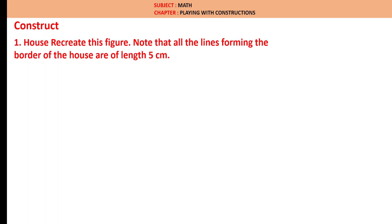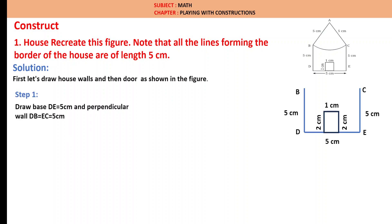Construct a house. Recreate this figure. Note that all the lines forming the border of the house are of length 5 cm. Here we need to construct a house where walls are 5 cm height, the base is 5 cm, and the conical shape is 5 cm radius. Solution: First, let us draw house walls and then door as shown in the figure. Draw base DE of 5 cm and perpendicular wall DB is equal to EC is equal to 5 cm, and the door of height 2 cm and width 1 cm.